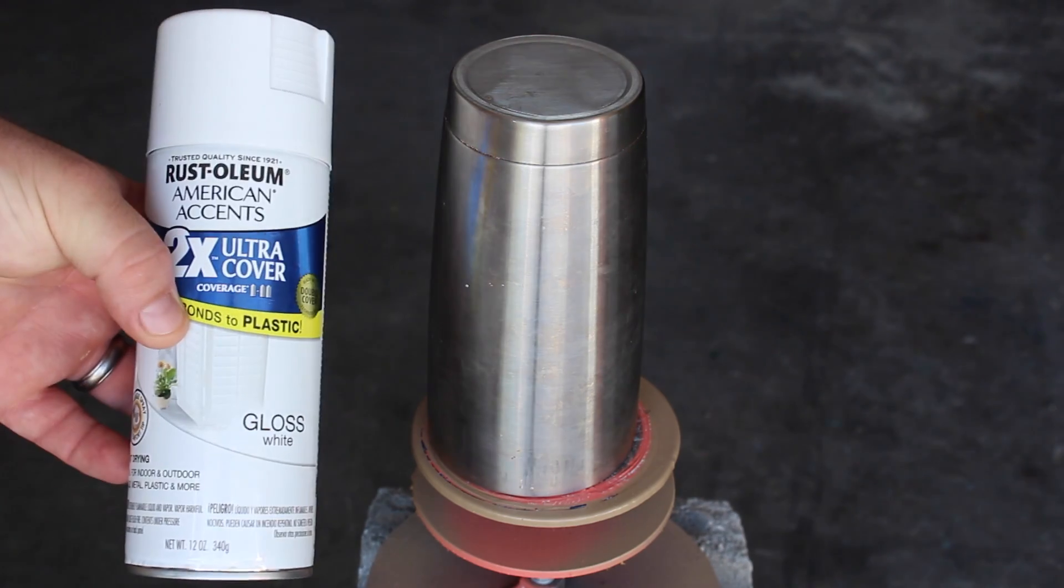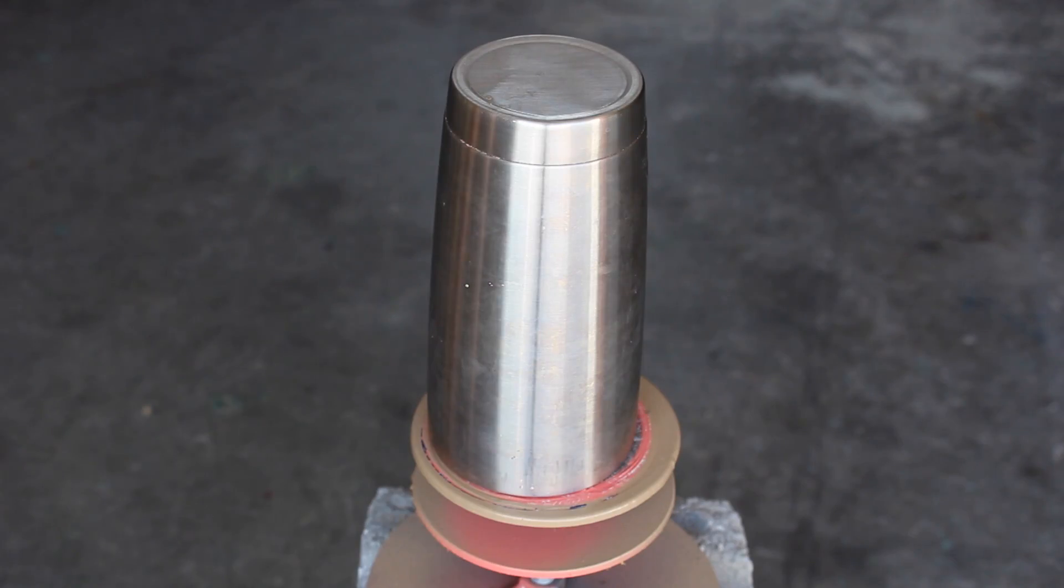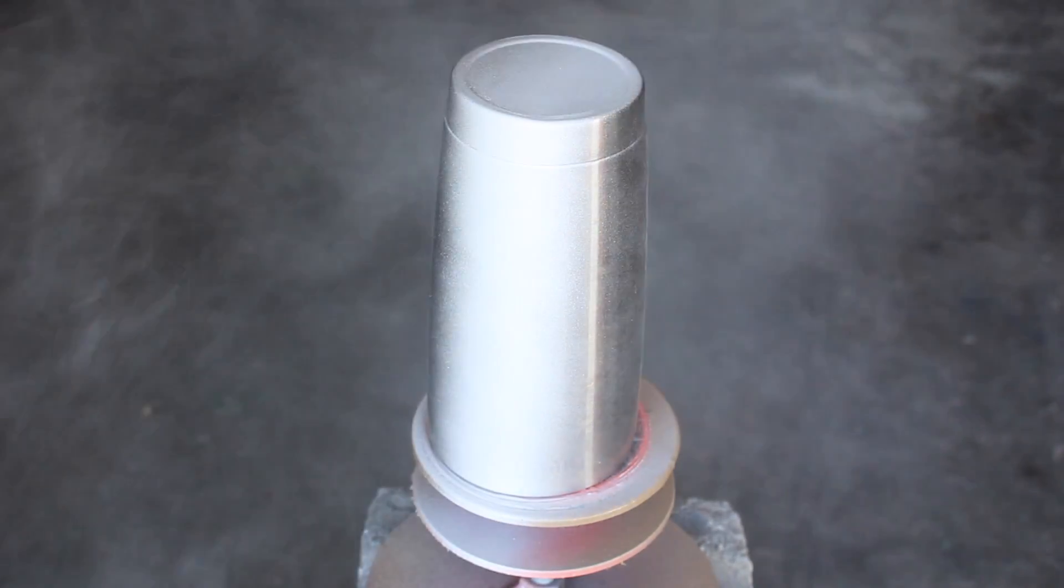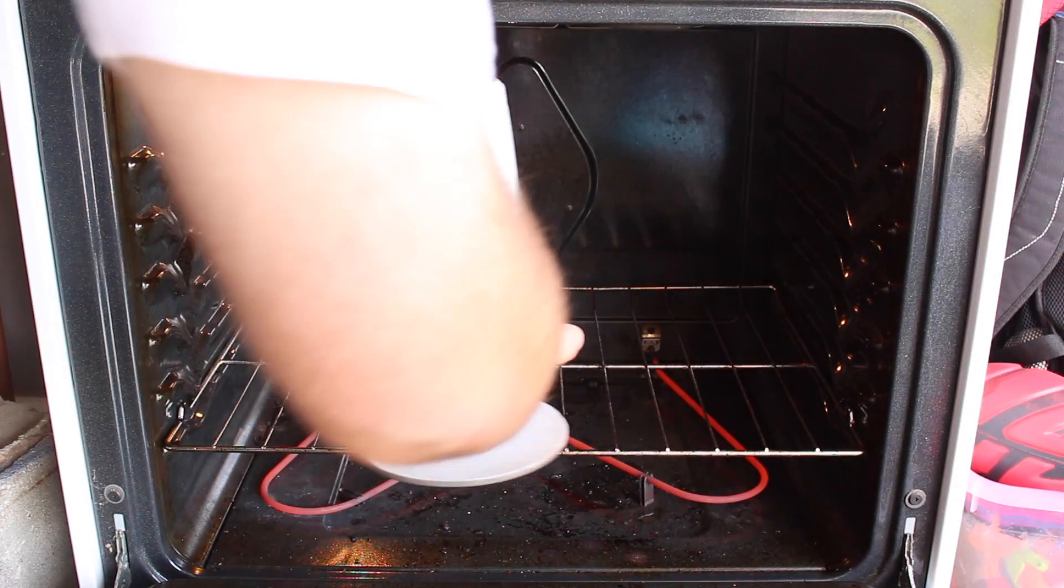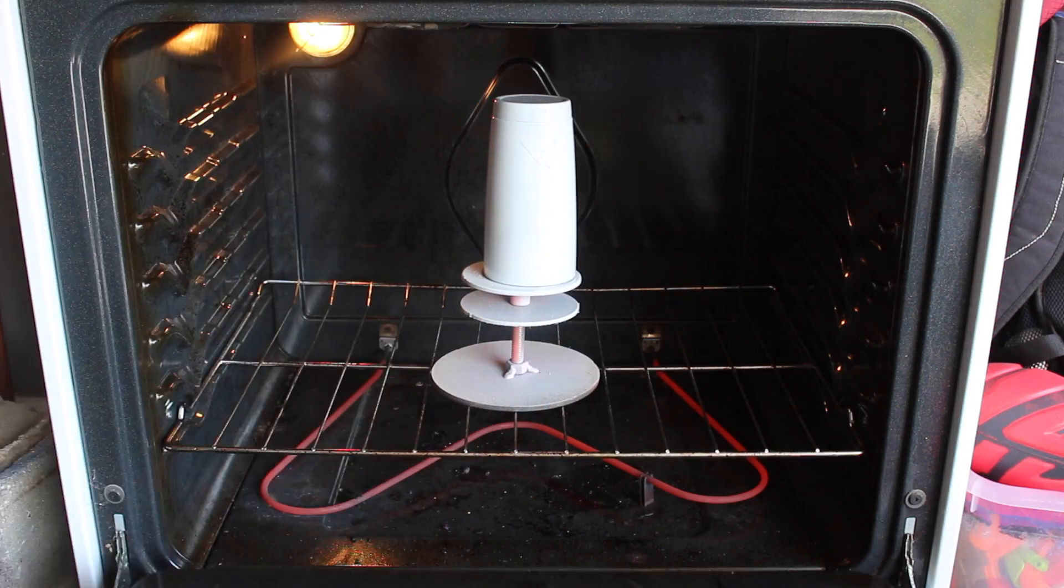For demonstration purposes, we're going to paint the stainless steel cup gloss white, place the cup in an oven for 45 minutes at 200 degrees. This will give us the effect for the DIY video we're doing.